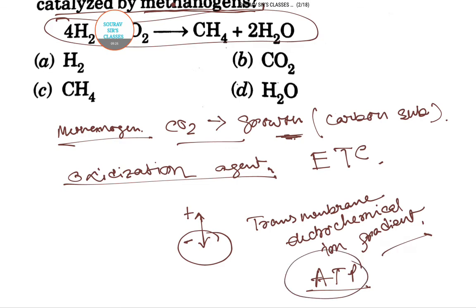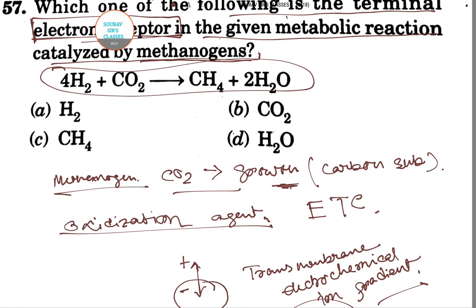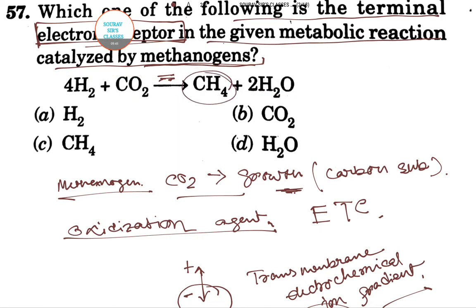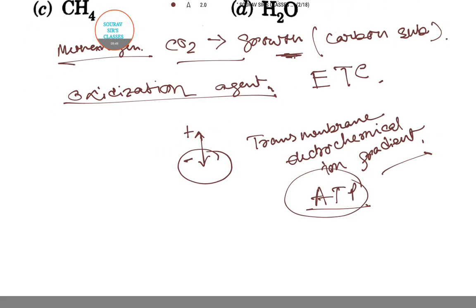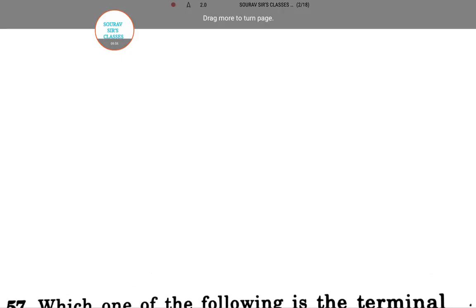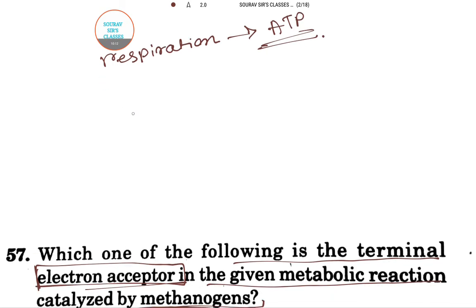That in turn produces ATP for energy — ATP production is really important for a cell to function. The equation shows the reduction of CO₂ by H₂ to produce methane. CO₂ reacts as an oxidizing agent to produce methane. The respiration allows the production of ATP.